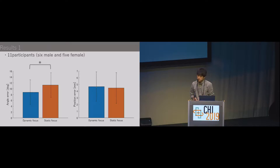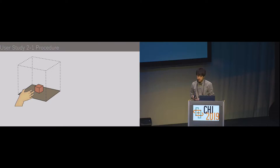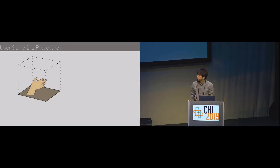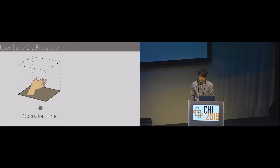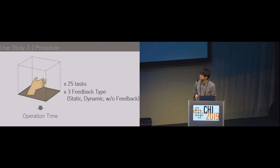We then thought about how this surface recognition affects object manipulation and conducted a grasping experiment. In this experiment, participants repeatedly performed the task of grasping and lifting a cube. When the cube was lifted up to 5 centimeters or more for 1.5 seconds, one task was completed. We measured the time from pressing the cube to task completion to evaluate the operability of the system. This task was performed 25 times for each of three feedback conditions: static focus, dynamic focus, or no haptic feedback. The position and size of the cube changed randomly for each task.